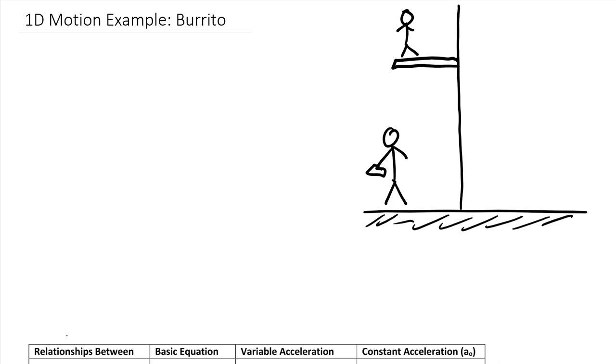There's a total distance from the ground up to your roommate of about six meters, which is around 20 feet. And let's say that you're going to release the burrito from the ground. You'll release the burrito at 1.5 meters.